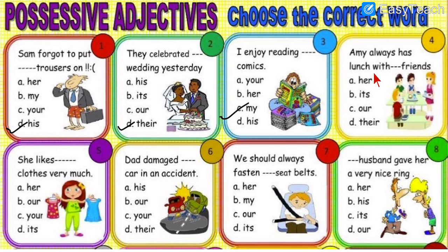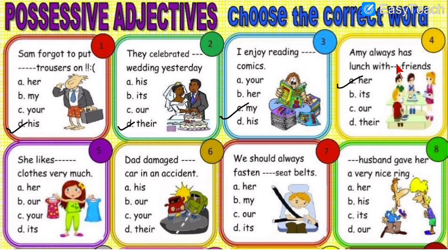Number four: Emmy always has lunch with dash friends. Emmy is the name of a girl. For a girl, what shall we write — her friends, its friends, our friends, or their friends? Emmy is the girl, so she always has lunch with her friends. You write 'her.'